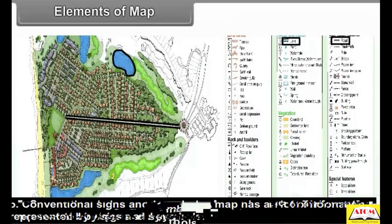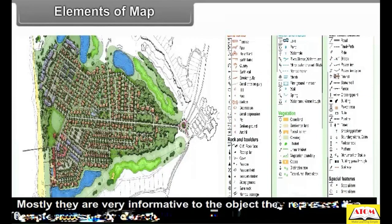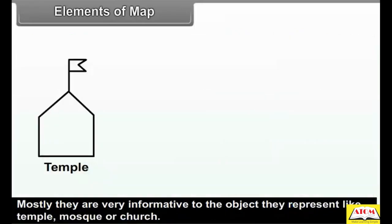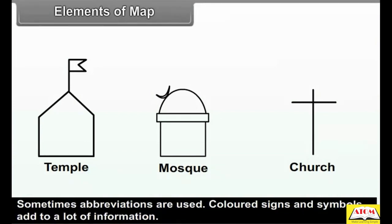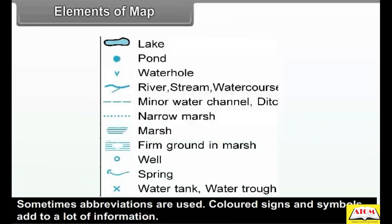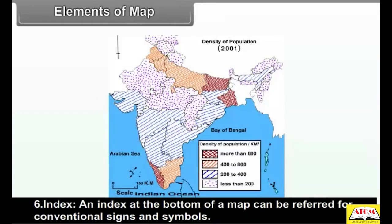A map has a lot of information represented by conventional signs and symbols. Mostly they are very informative to the object they represent, like a temple, mosque, or church. Sometimes abbreviations are used. Colored signs and symbols add a lot of information. These signs and symbols are not drawn to scale. An index at the bottom of a map can be referred to for conventional signs and symbols.